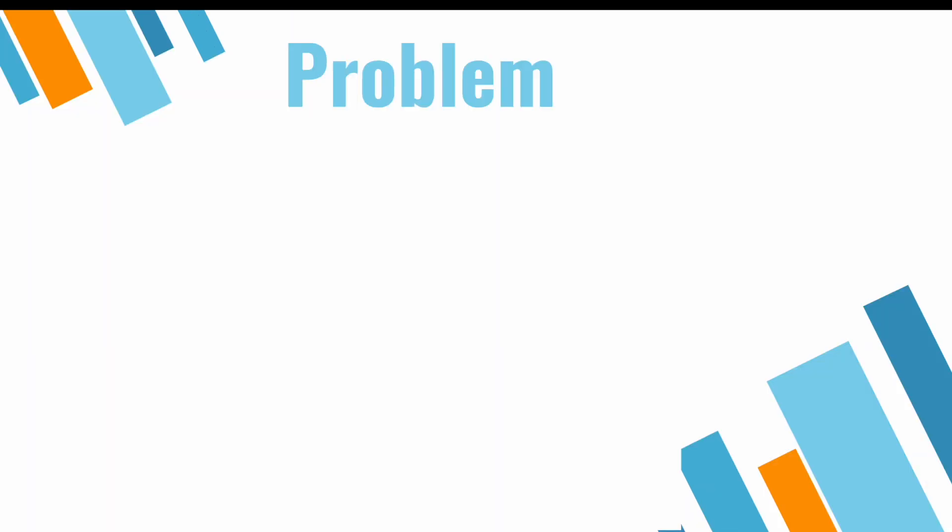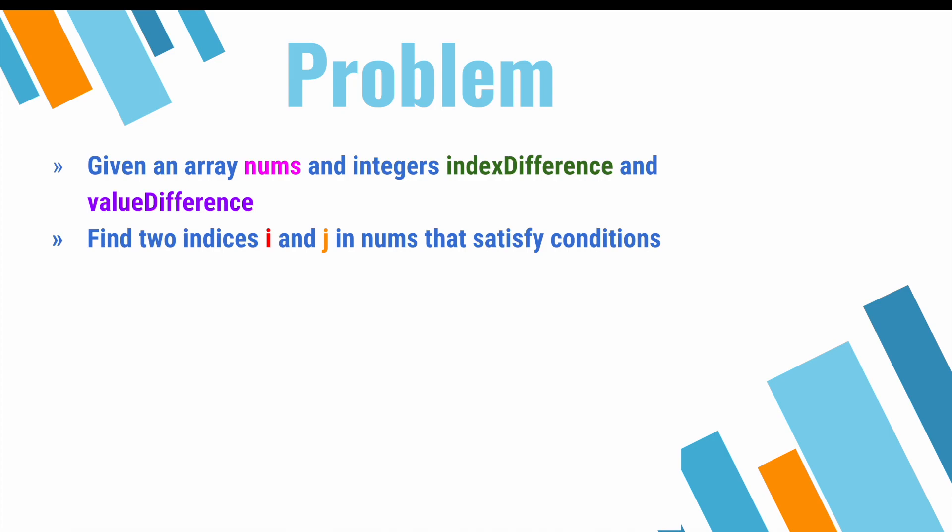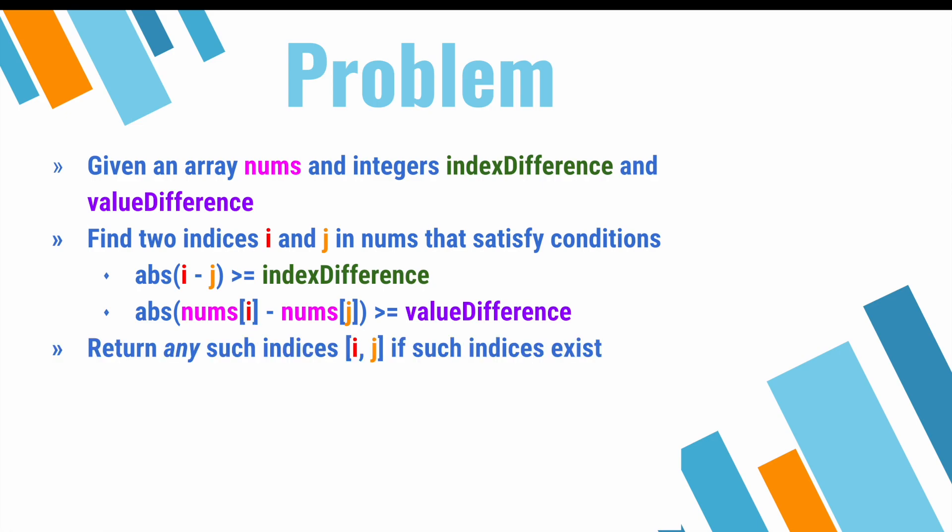Here's our problem. We're given an array of nums and integers index difference and value difference. Our goal is to find indices i and j in nums that satisfy the following conditions, where the absolute value of i and j is at least as large as index difference, and the absolute value of the difference between the values associated with indices i and j is at least value difference. If any such indices exist, then we return those indices. Otherwise, we return negative 1, negative 1.